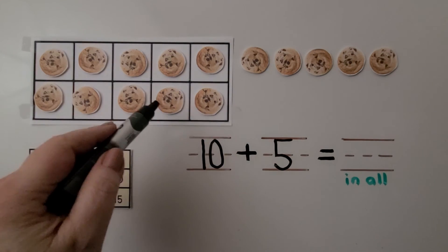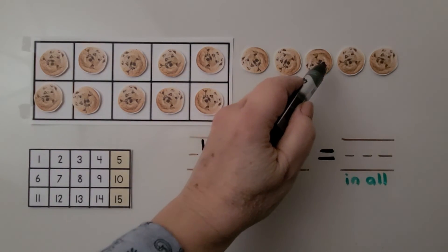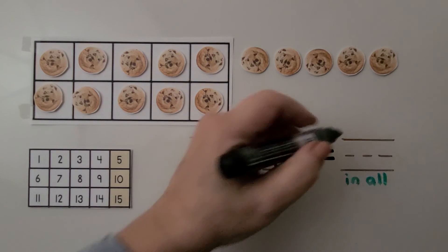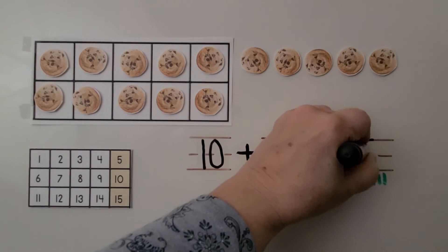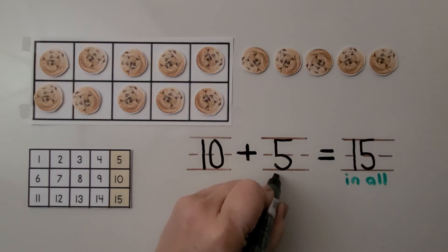We have 10, 11, 12, 13, 14, 15. There are 15 in all. We can write the addition sentence. 10 plus 5 is equal to 15.